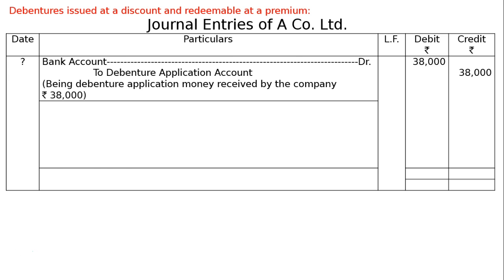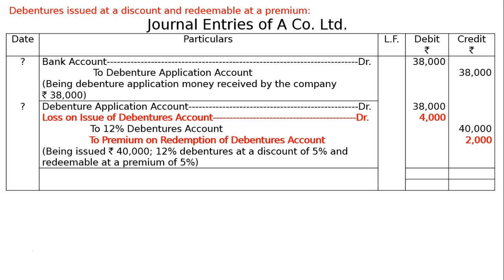Debenture application account debited Rs. 38,000. And loss on issue of debentures account, debit. Discount on issue and premium on redemption, both 5%. Hence, 10% of Rs. 40,000, that is Rs. 4,000.